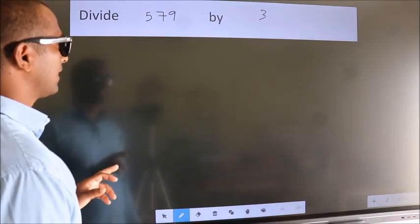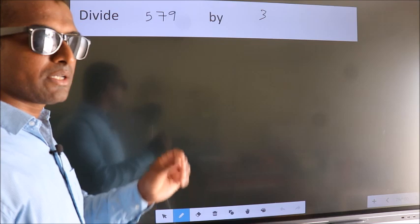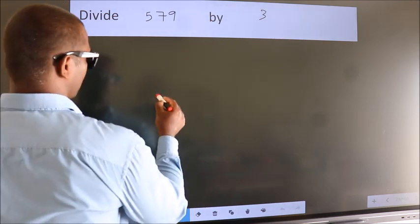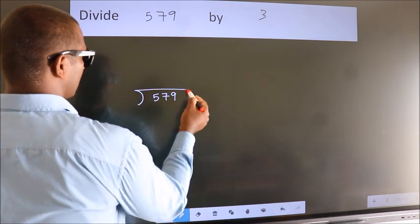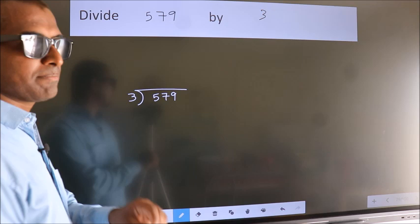Divide 579 by 3. To do this division, we should frame it in this way. 579 here, 3 here. This is your step 1.